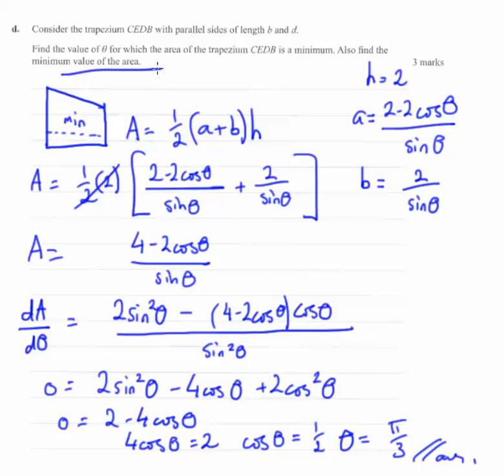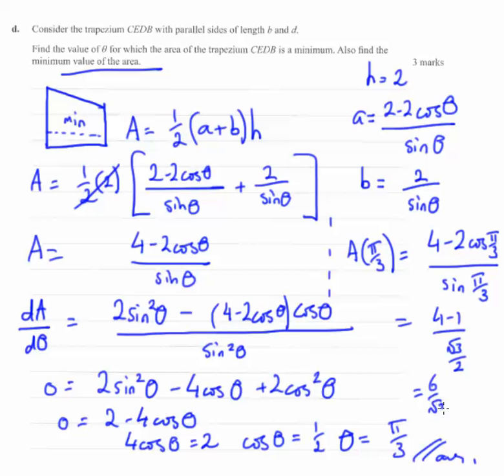It's not good enough because we need to find the minimum value of the area. So we substitute pi on 3 into this area formula. We have A of pi on 3 equals 4 minus 2 cos pi on 3 over sine pi on 3. Cos pi on 3 is half, so we get 4 minus 1 over sine pi on 3, which is root 3 on 2. That becomes 6 over root 3, and if you rationalise the denominator and simplify, you get 2 root 3.